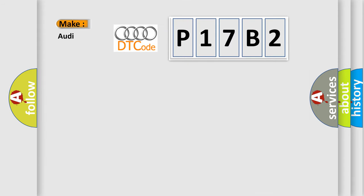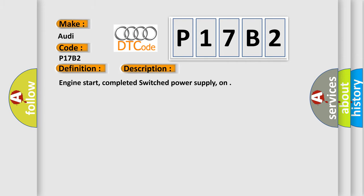So, what does the diagnostic trouble code P17B2 interpret specifically for Audi car manufacturers? The basic definition is Gear Valve. This is a short description of this DTC code: Engine start, completed switched power supply on.